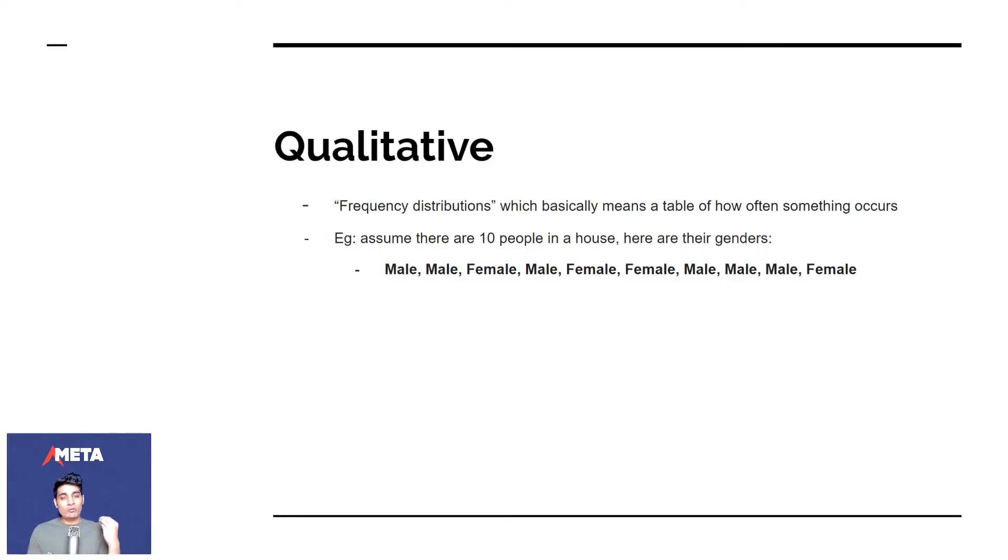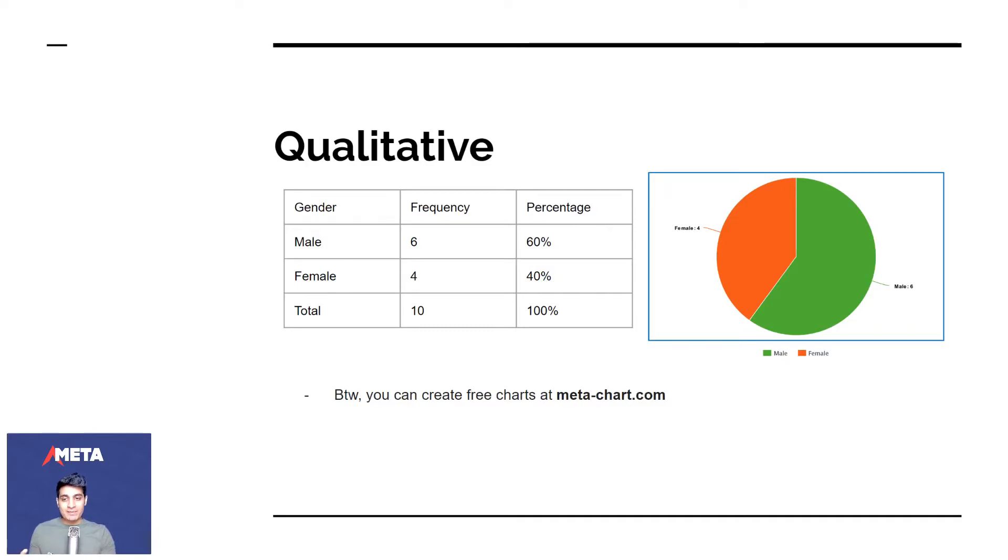Which basically mean a table of how often something occurs. So assume there are 10 people in a house and here are their genders. Male, male, female, male, female, female, male, male, female. And we meet them in this particular order. Qualitative data description basically means you collect all the people who are male, you collect all the people who are female, you put a frequency number on it. Six males, four females, total is 10, the percentage. This is simple description. And then you can make a pie chart out of it. You can create free charts at metachart.com. Again, we have no affiliation with them. Our job is just to give you the tools that allow you to do all of this. If you're using Google Docs or Google Sheets, you can make charts too.